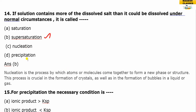Nucleation is the process where atoms or molecules come together to form a new phase — that is, a crystal form. Liquid molecules join together to form a new phase of structure. This process is called nucleation.